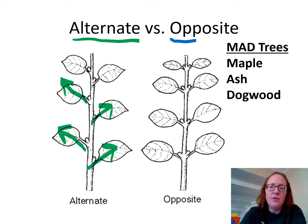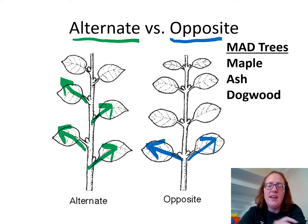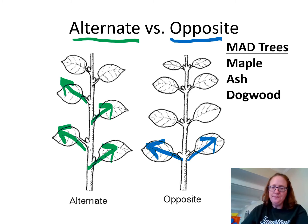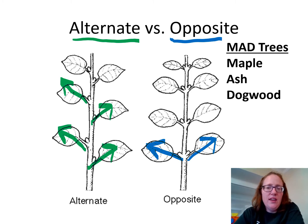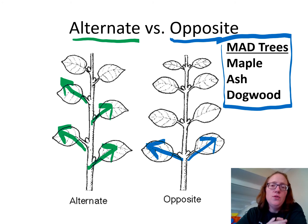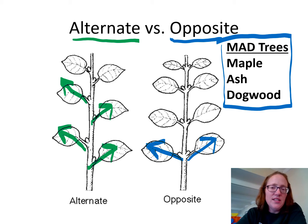If a tree has opposite branching, that means the leaf comes off the right and the left of the branch in the same place — the leaves are opposite each other on the branch. The three trees that have the opposite branching pattern are the MAD trees: maple, ash, and dogwood. So if you see a tree with opposite branching, it's probably a maple, ash, or dogwood. Everything else is alternate.